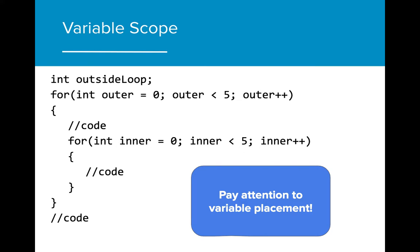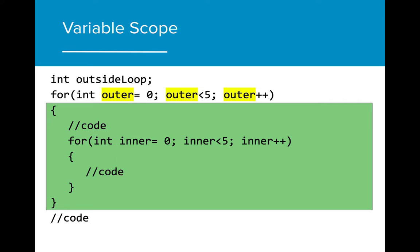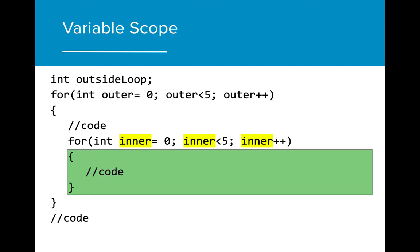As stated earlier, it's very important to pay attention to the placement of variables in your program, especially as we continue to add control structures that have different levels of variable access. Because the variable outside loop is outside of both loops and is executed prior to the rest of the code, outside loop can be used in both for loops and in any code that follows the loops. The variable outer is initialized in the outer for loop and can only be used within the brackets of the outer for loop. Because the inner for loop is inside of the outer for loop, the variable outer can be used in the inner for loop. The variable inner can be used only between the brackets that enclose the inner for loop. If the variable inner is used outside of the for loop, an error will occur. These different layers of the program each have their own variables, so make sure to know where each one can be accessed.